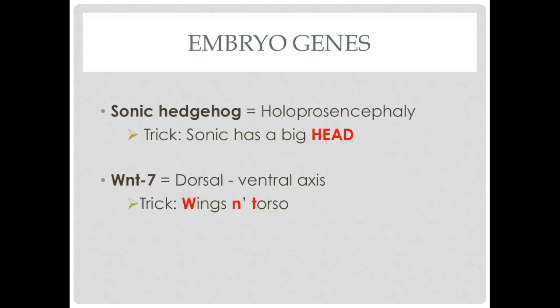Some embryo genes that you should know about are the sonic hedgehog gene, which causes holoprosencephaly. My trick is that Sonic has a big head in proportion to his body, so I'm already thinking that the effect has to do with encephaly — something related to the head.